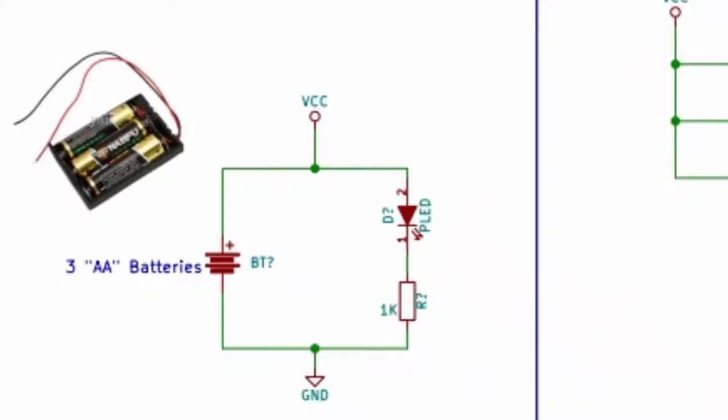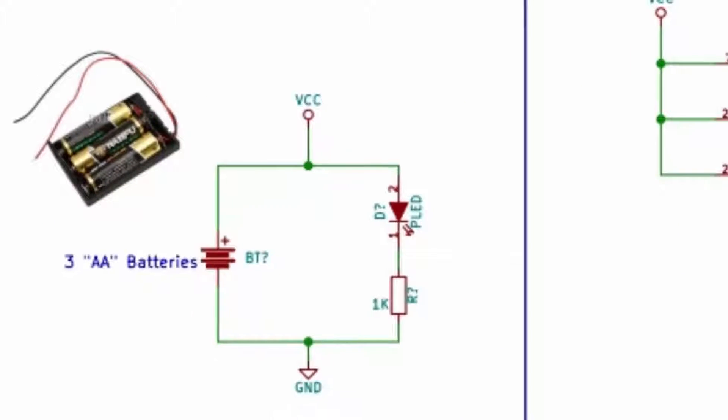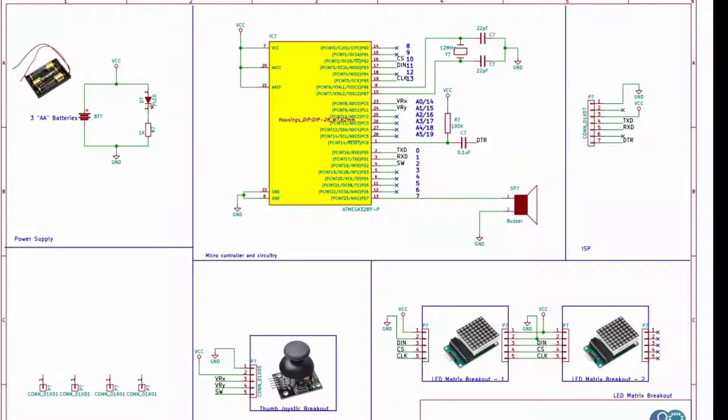We will simply power the console with three AAA sized batteries. Other important passive components are listed on the schematic. You can download the schematic, code and other files from the link in the description.